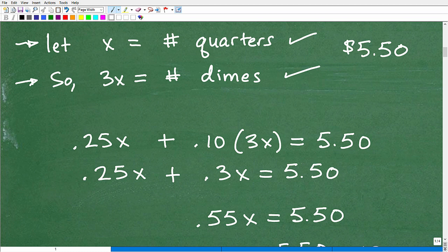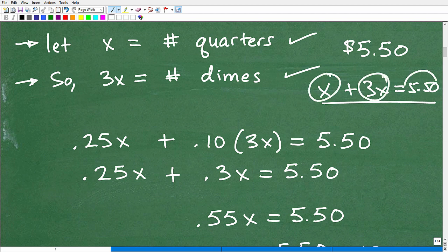But we have this dollar value, $5.50. That has nothing to do with the number. It has to do with the monetary value, how much total money you have, not the number. We can't construct an equation where some of you might make this mistake: X quarters plus 3X dimes equals 550. A lot of you would make that mistake, I'm sure, because that's another classic mistake with these type of problems. But in fact, this is not the case. We have to give the values because this is $5.50 in dollars.